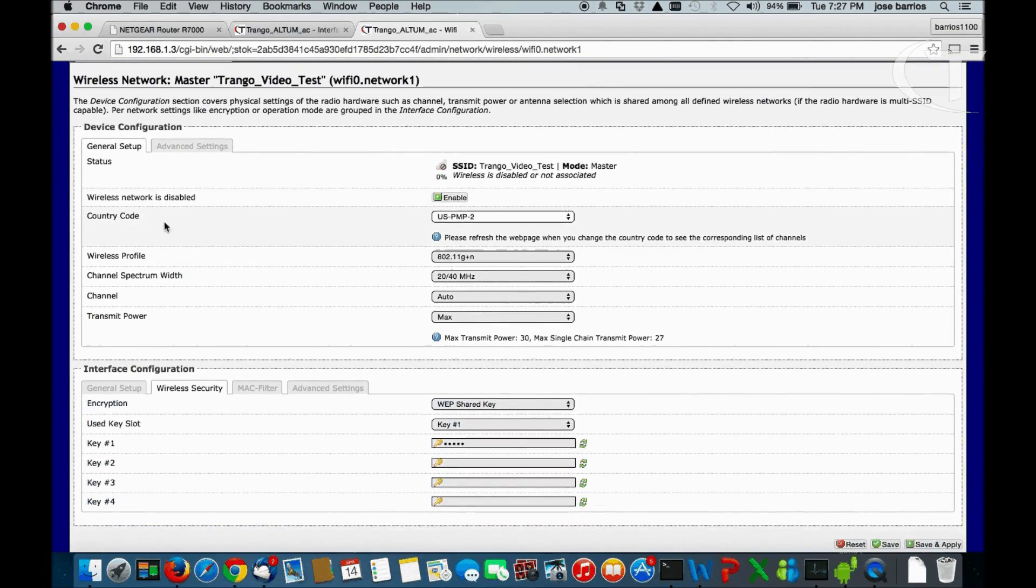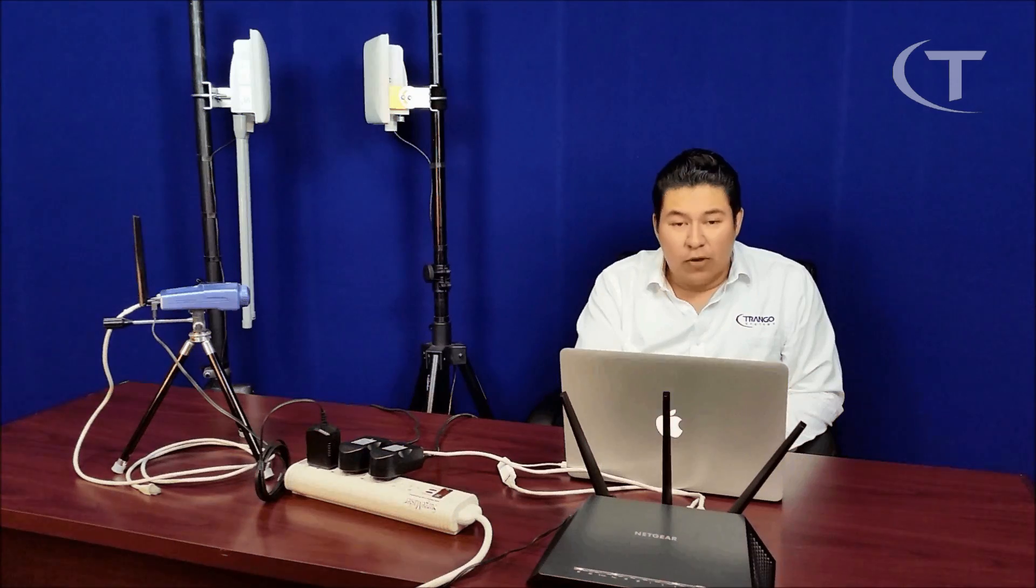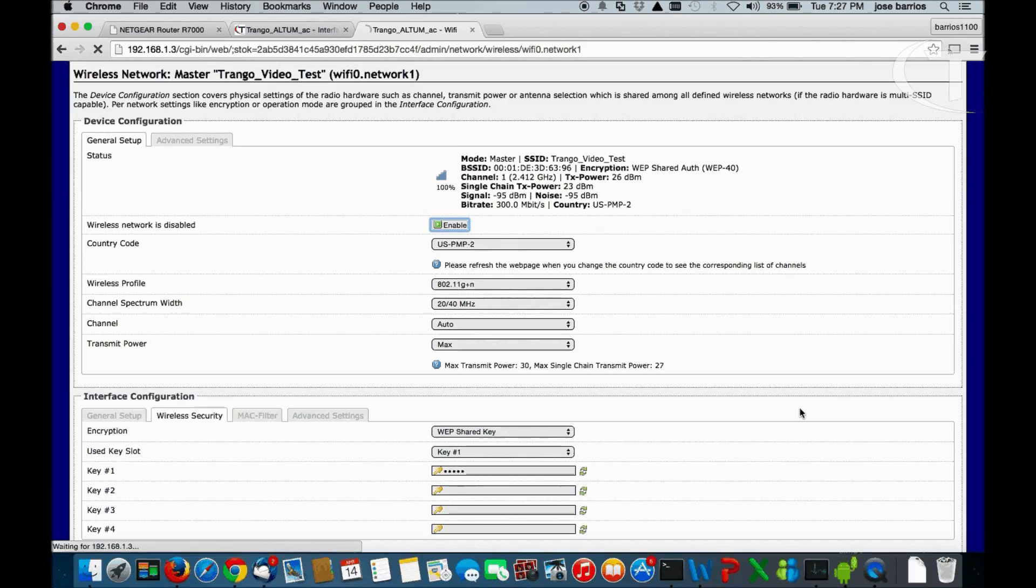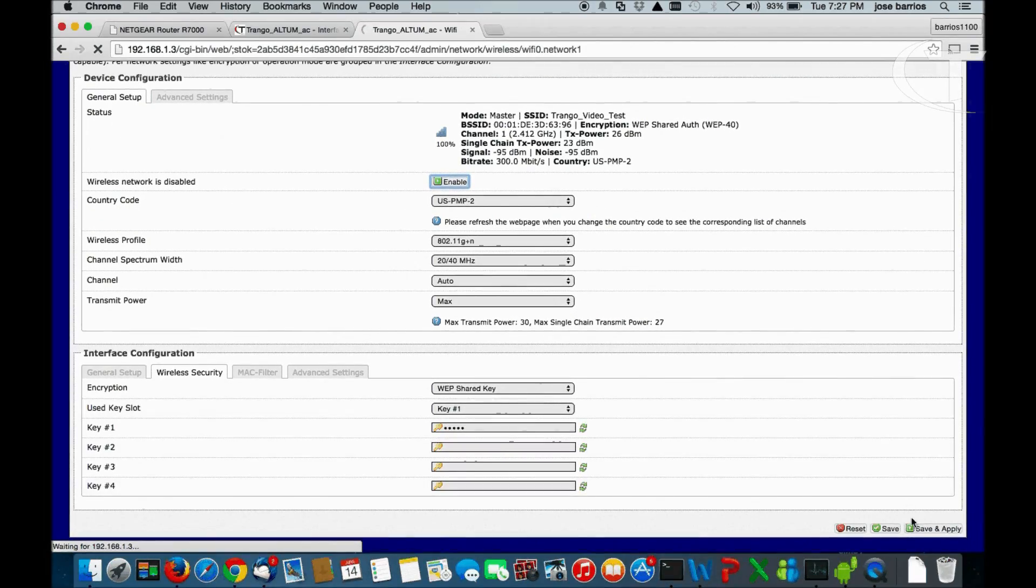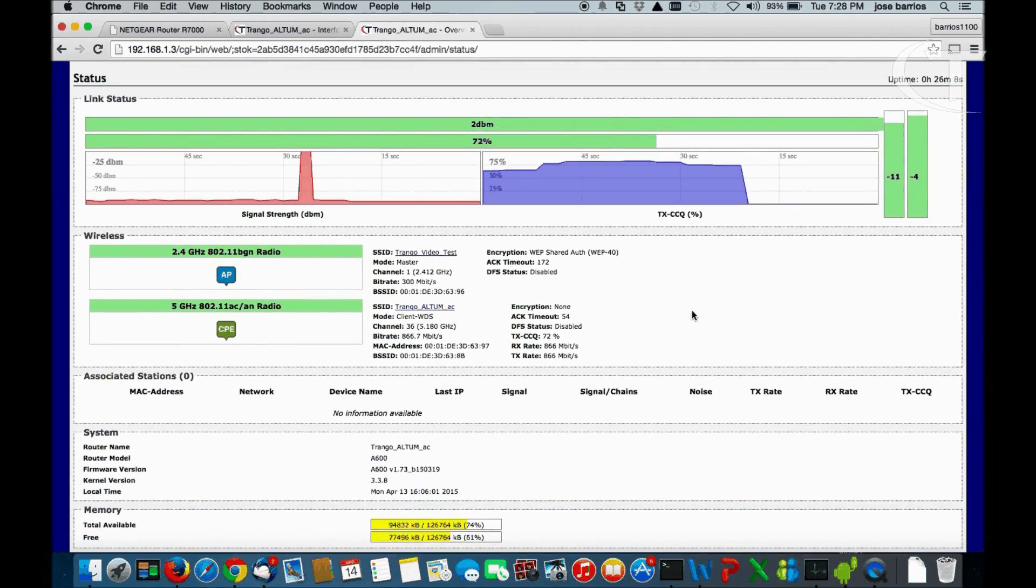Now that we have all the features the way we want them to, we're going to come here where it says wireless network is disabled. On the right hand side is enabled. Click on this. Now we have it enabled. Save and apply. So now we have actually enabled the wireless access point on our far side station.